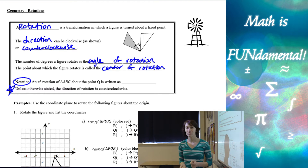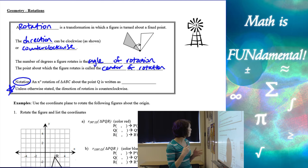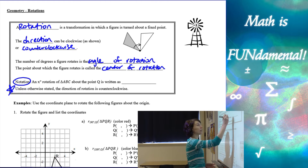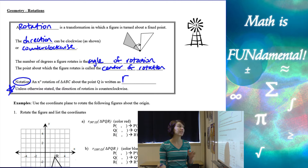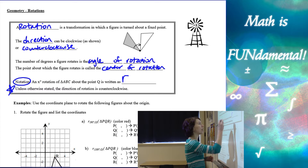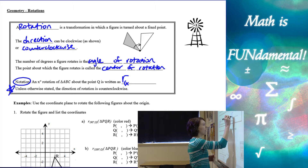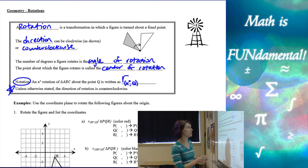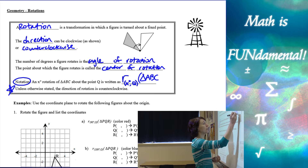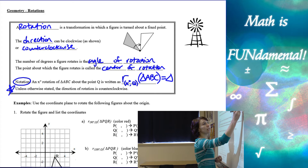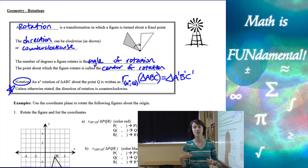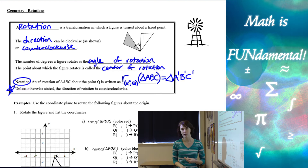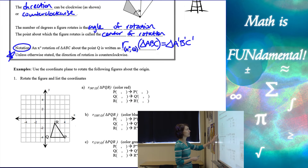As mentioned in our last video, notation is one of the most difficult things about transformations and it's really important that you practice it. For an x-degree rotation of triangle ABC about point Q, our notation uses a lowercase r — we used capital R for reflections, so we use lowercase r for rotation. In parentheses we write x degrees, comma Q — angle of rotation first, then center of rotation. Then we have our pre-image ABC and our image is A prime, B prime, C prime.